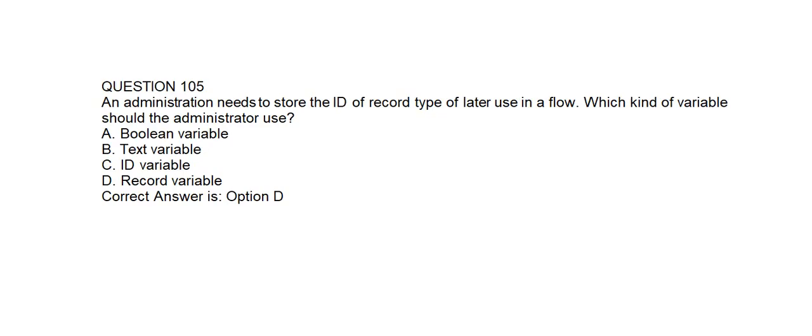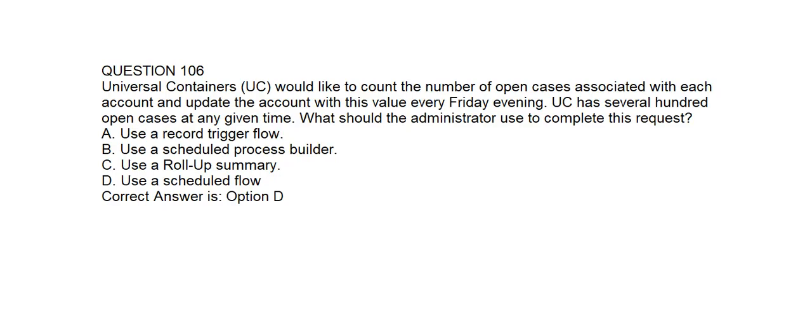Question number one hundred and five. An administrator needs to store the ID of record types for later use in a flow. Which kind of variable should the administrator use? Option A: Boolean variable. Option B: Text variable. Option C: ID variable. Option D: Record variable. Correct answer is Option D: Record variable.